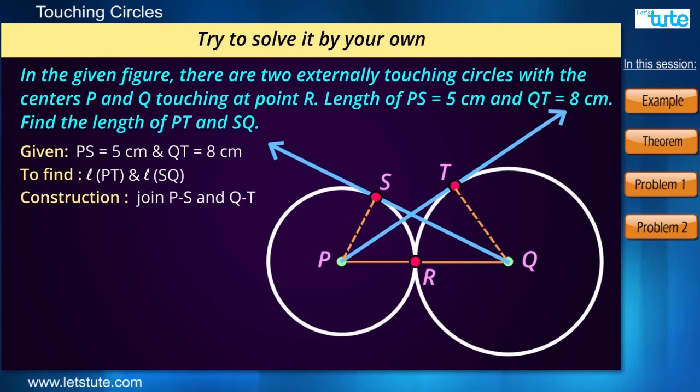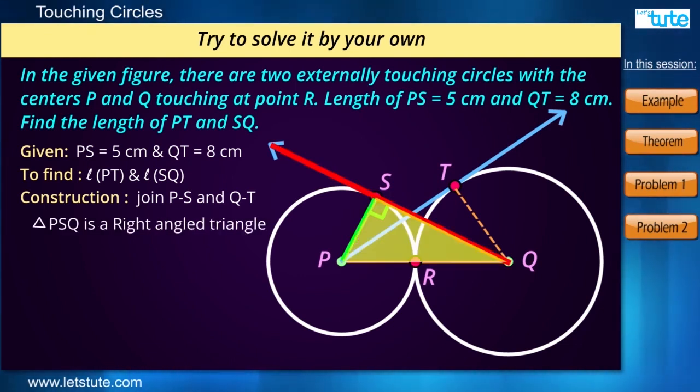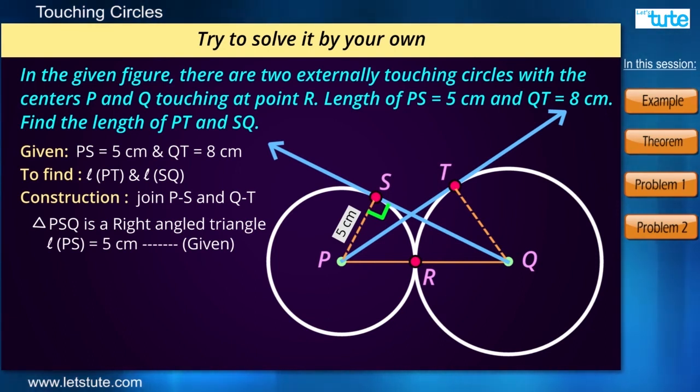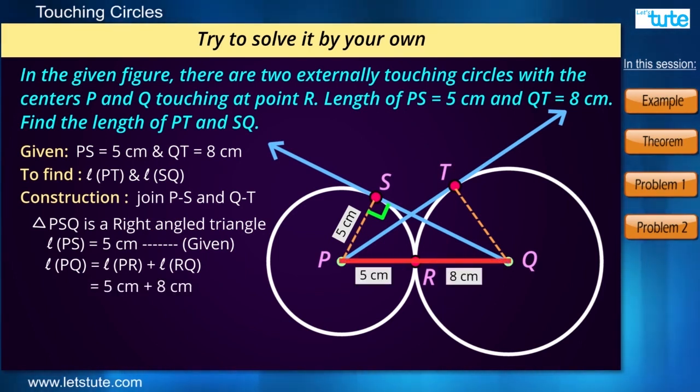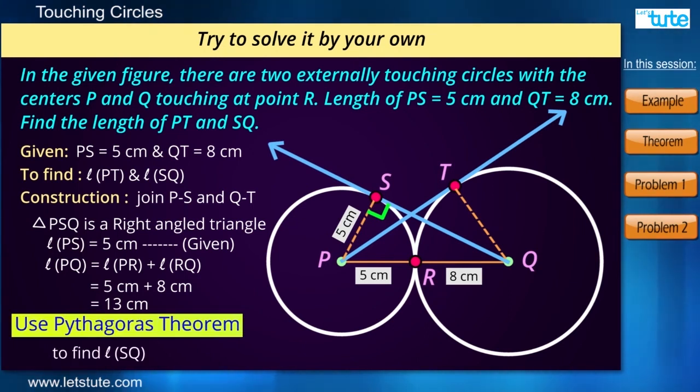And PS is the radius. We know the length of PS. PS is nothing but 5 cm. The length of PQ can be very easily found out. It is nothing but PR plus RQ, which is nothing but 5 cm plus 8 cm, which is equal to 13 cm. Now we have two sides. Now using Pythagoras theorem, you can find the measure of the third side of the triangle. And in the similar manner, you can find the length of PT also.